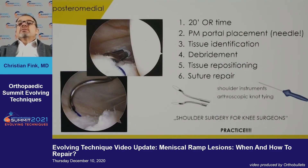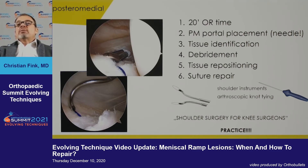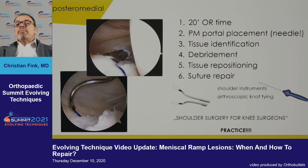This is really an advanced technique. It takes about 20 minutes additional time, at least in my hands. You need good portal placement — the needle gives you the right location. You have to identify the tissue, debride it with the shaver, then reposition it, which is difficult in the chronic lesion where the capsule can be really retracted down and you have to uplift it. I call this shoulder surgery for the knee surgeon.